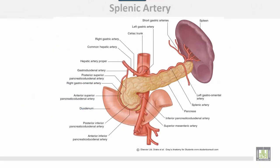This is the splenic artery. It has a tortuous course along the upper border of the pancreas. It gives short gastric arteries, left gastroepiploic artery, and terminal branches of about 5 or 6 splenic branches.